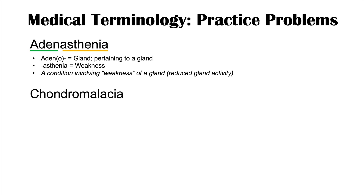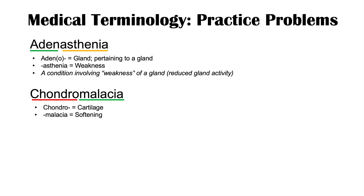The next word is chondromalacia. The prefix chondro means cartilage, and the suffix malacia means softening. So chondromalacia means a condition involving softening of the cartilage. You might have heard of osteomalacia, where there's a softening of bone — this is the same concept applied to cartilage.